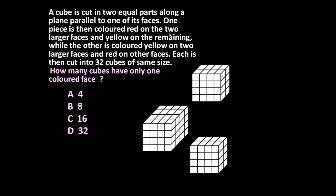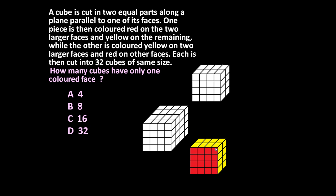One piece is colored red on the two larger faces, while the smaller faces are colored yellow. The second piece is colored yellow on its two larger faces — the large face and the opposite large face — and all other faces are colored red.